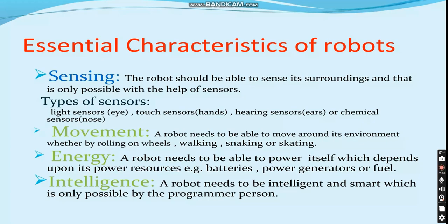The essential characteristics of robots are sensing, movement, energy, and intelligence. We're going to speak about them in depth in class. There are different types of sensors. Movement covers distance, wheels, and walking. Energy sources include batteries, power generators, and fuels. Intelligence is what you'll be programming the robot with.